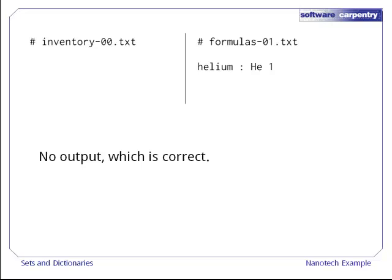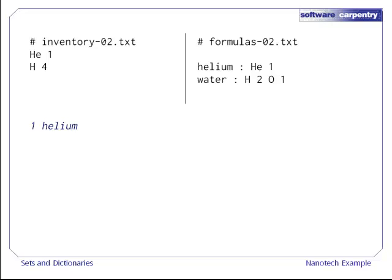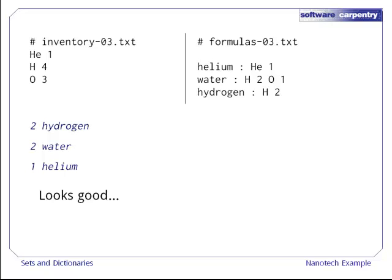Now it's time to test. Let's try an empty inventory against a single formula. There's no output, which is what we expect. Add one atom of helium to our inventory. That seems right. Add some hydrogen, but don't give the program any formulas that use hydrogen. Still correct. Add the formula for water, which does use hydrogen, but don't provide any oxygen. There's no water in the output, but helium is still appearing as it should. Add the formula for molecular hydrogen, and sure enough, we can make a couple of those. Put some oxygen in the warehouse, and sure enough, we can make a couple of water molecules. There are quite a few other interesting tests still to run, but things are looking good so far.